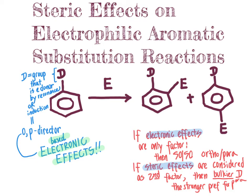When tackling problems in this course, you will see two scenarios. Some problems indicate to consider electronic effects only — in that case, completely disregard sterics. Other problems say to consider everything, both electronic and steric effects, to predict the single major organic product. In reality, steric effects are generally strong enough to result in some preference for the para-product, but the exact ratio depends on how bulky the directing group is and the specific reaction conditions.